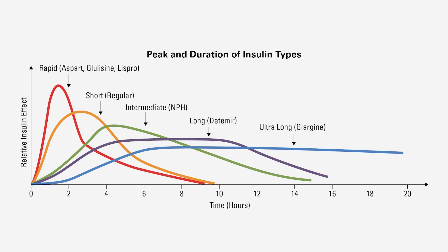The red curve on this graph represents the rapid and short acting insulin. This dose may be referred to as a bolus, with a quick onset and shorter duration. The bolus doses are often increased during cancer treatment with steroids.